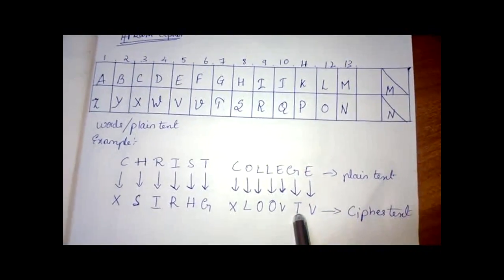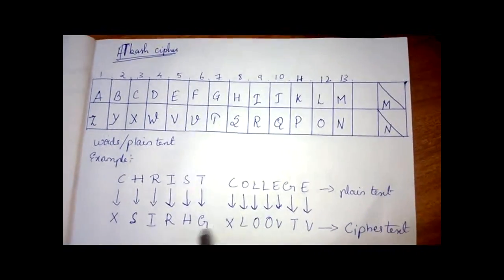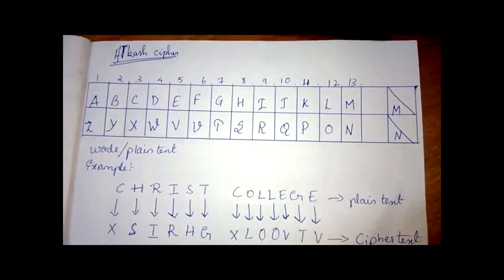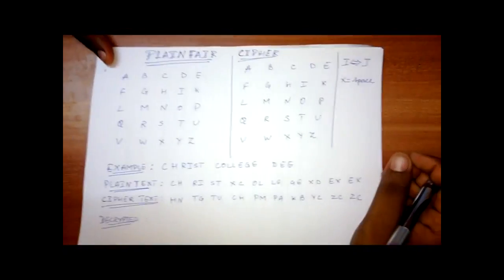Now the same is repeated for all the other alphabets and it's converted into a cipher text. Now if the receiver has to convert it back, decrypt the particular sentence, he has to look back into this table and convert it. And that is all about atbash cipher.